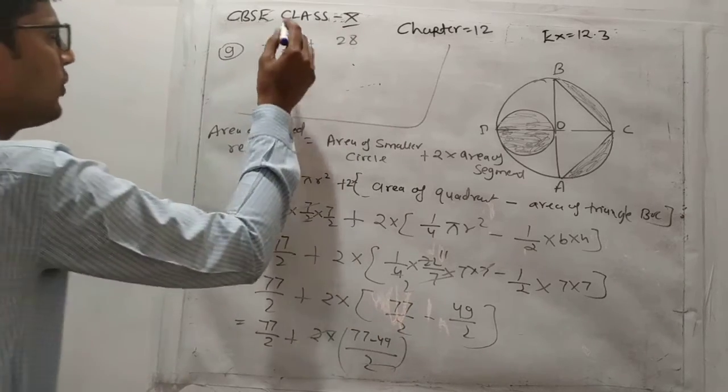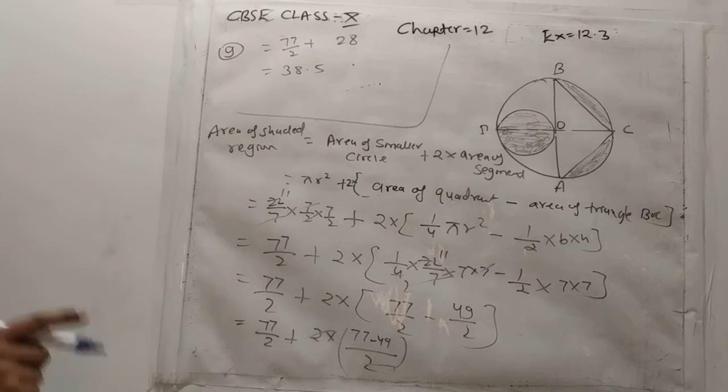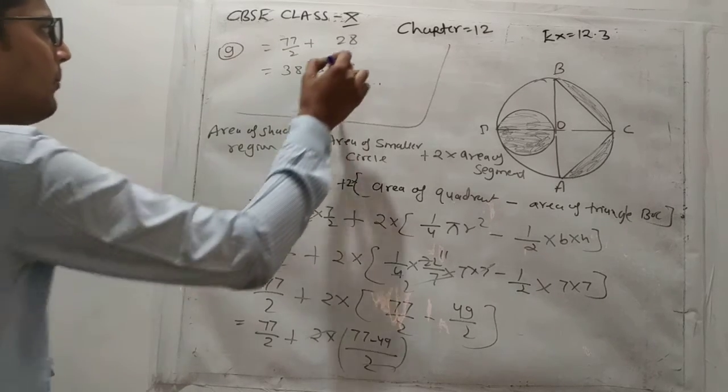If we solve this out, using table of 2, it becomes 38.5. 38.5 plus 28.